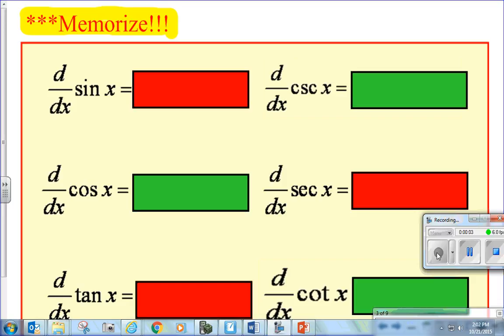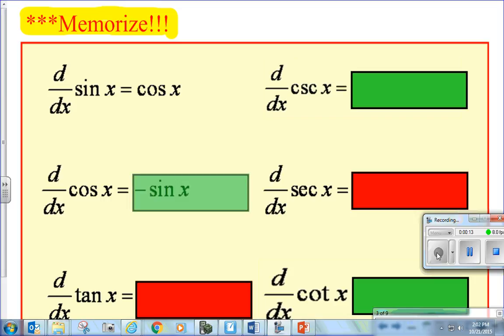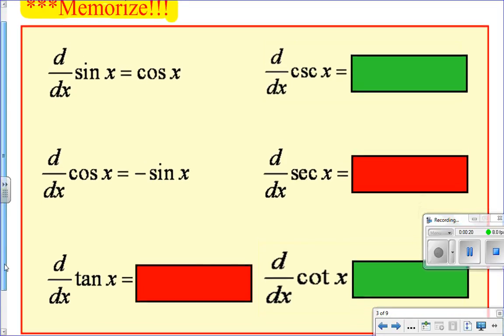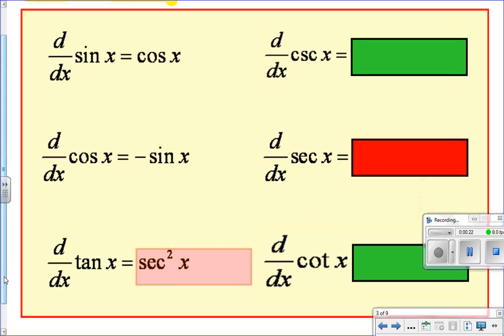Okay, so these you're just going to have to memorize. Cosine is the derivative of sine. The derivative of cosine is negative sine. What's the derivative of tangent? Any guesses?